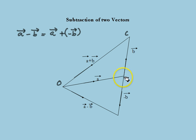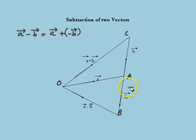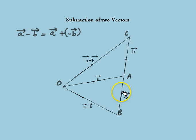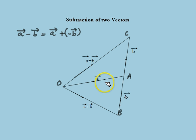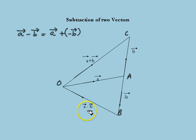The negative of vector b is represented as vector ab. That means if we reverse the direction of vector b to get minus vector b, and add it to vector a by the use of the triangle law or parallelogram law, then we can obtain the subtraction of these two vectors as vector OB, which is equal to vector a minus vector b.